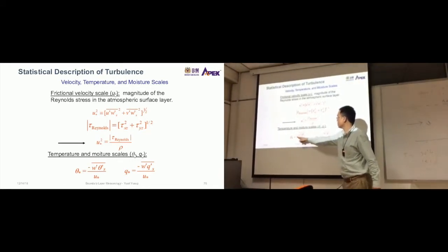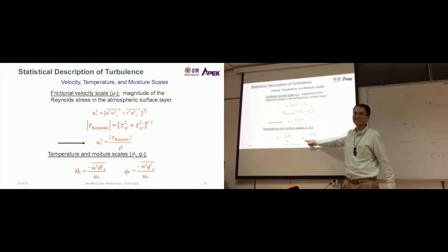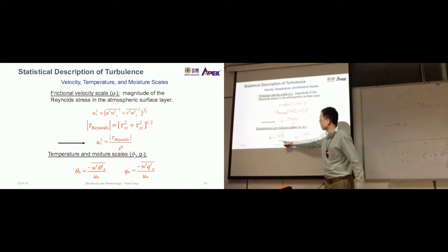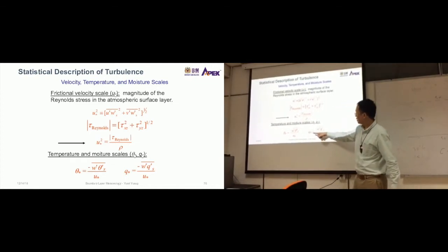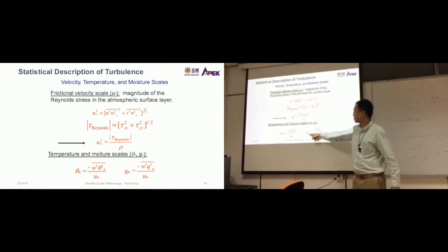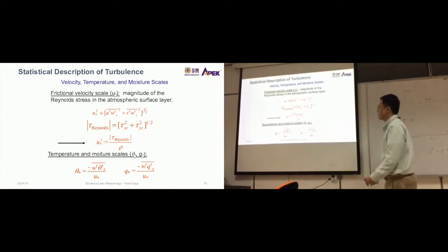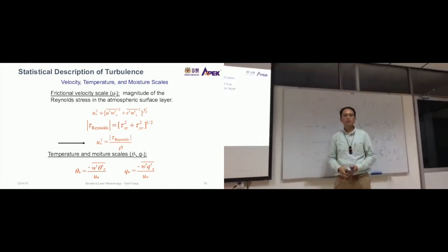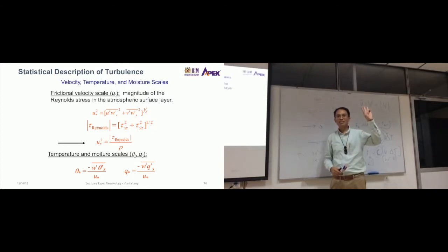The thing to introduce to you here right now is the scales: the friction scale, the temperature scale, and the moisture scale. Friction scale is for wind; temperature scales for heat; and q* is for humidity or moisture. Why do we just focus on these three? How do we describe the atmosphere through these three parameters: wind, temperature, and moisture? Pressure is related to wind.